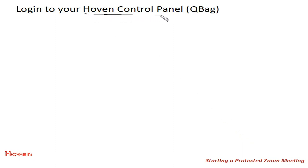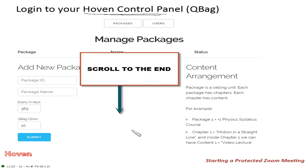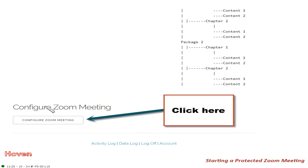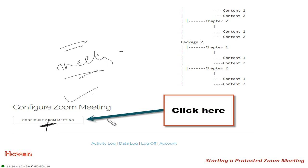Log in to your Hovn control panel — we will provide the login ID and password to you as our customer. Once you log in, scroll to the end of the first page and find 'Configure Zoom Meeting'. Click there. What we are going to do is save our meeting password and meeting ID into this control panel.